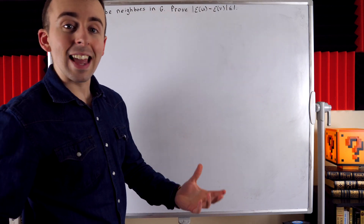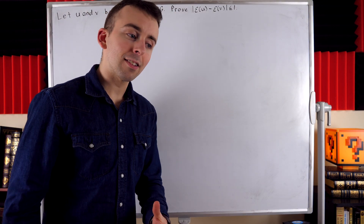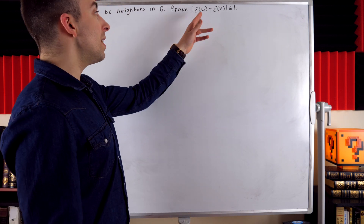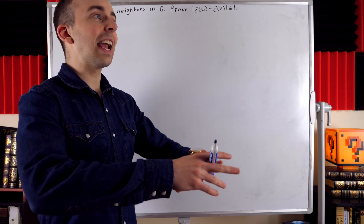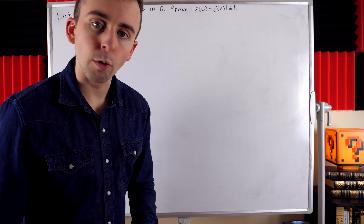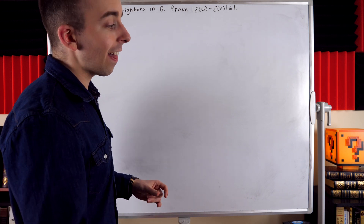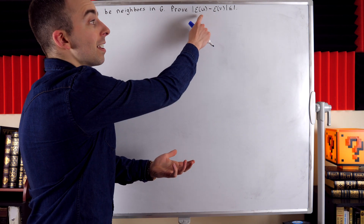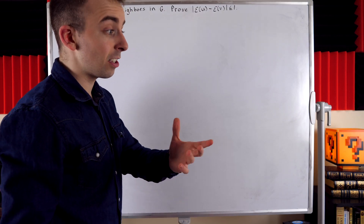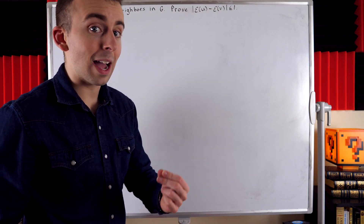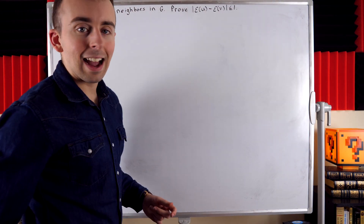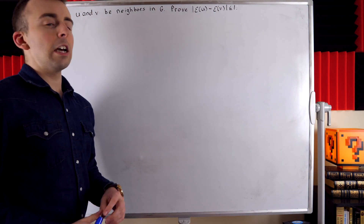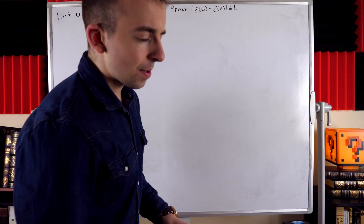Quick recap: what is the eccentricity of a vertex? It is the greatest distance between the vertex and all other vertices of the graph. Put another way, there's some vertex in the graph furthest from u. The distance between u and that vertex is the eccentricity of u, and similarly for the eccentricity of v.